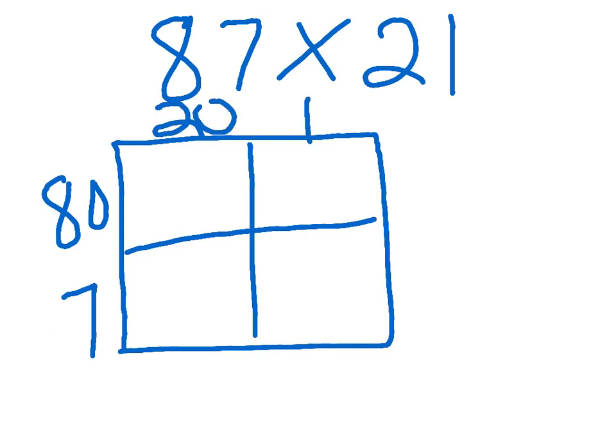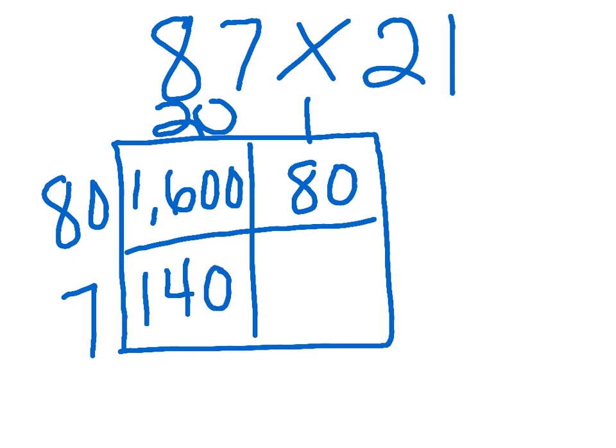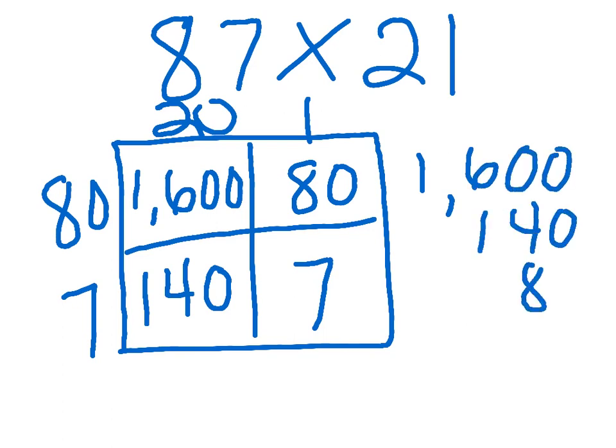Then we'll multiply each number times the other number like a grid. 80 times 20 is 1,600. 80 times 1 is 80. 20 times 7 is 140, and 1 times 7 is 7. Once that's finished, you add all your numbers together, which gives you your final product of 1,827.